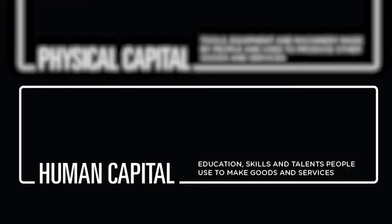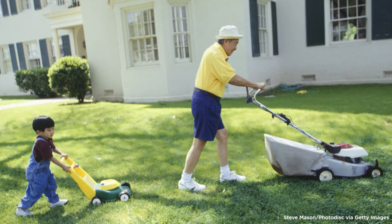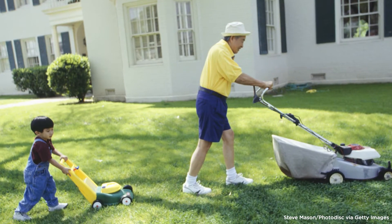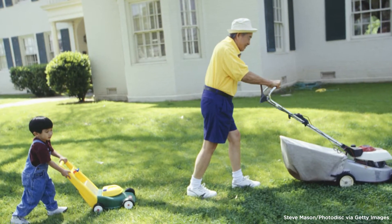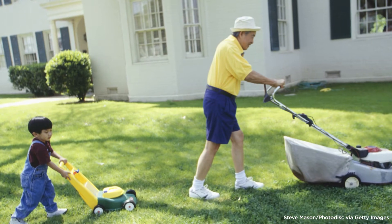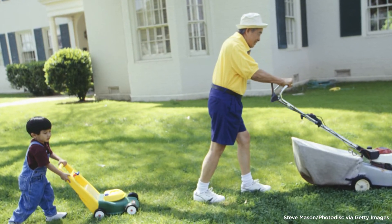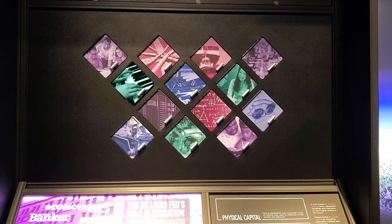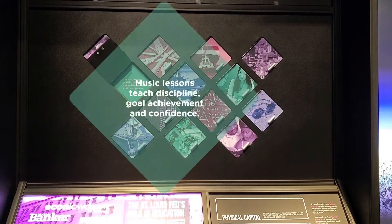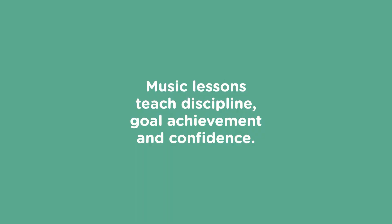Human capital relates to physical capital as it is the education, skills, and talents that people use to make goods and services. Thinking back to the lawn care business, you first have to learn how to use the lawn mower and trimmer before you become good at operating them. The panels on the exhibit show many examples, such as how music lessons relate to discipline, goal achievement, and confidence.